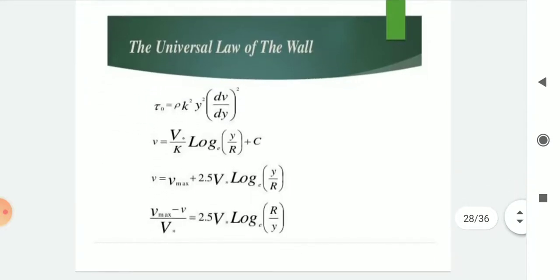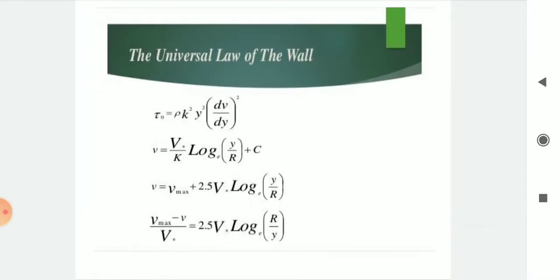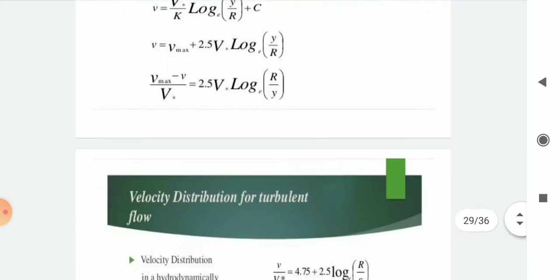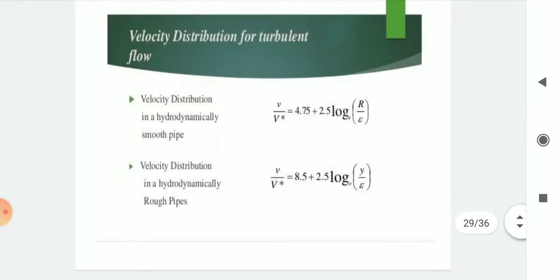The universal law of the wall: τ_0 = ρ·κ²·y²·(dv/dy)². The velocity distribution is given by v = (v*/κ)·ln(y/r) + C, and v = v_max + 2.5·v*·ln(y/r). Therefore, (v_max − v)/v* = 2.5·ln(r/y). This is the universal law of the wall, applicable to velocity distribution in turbulent flow.